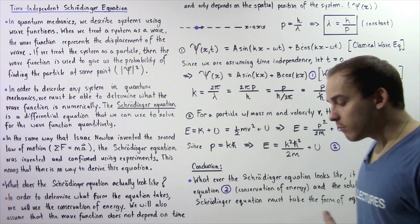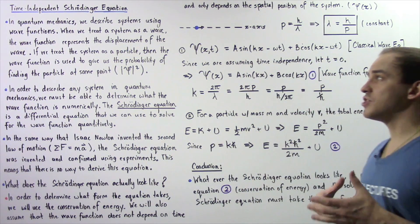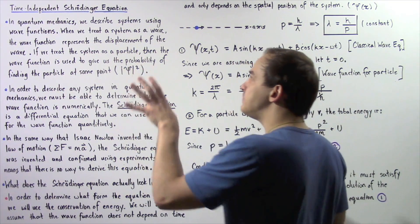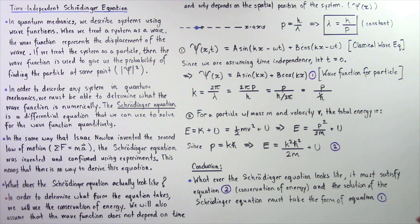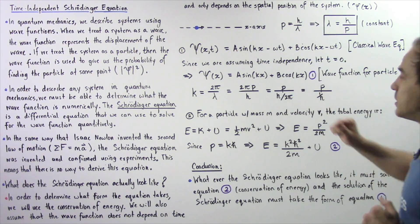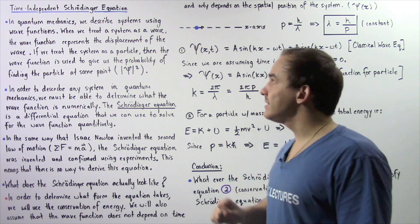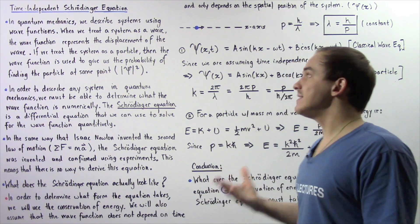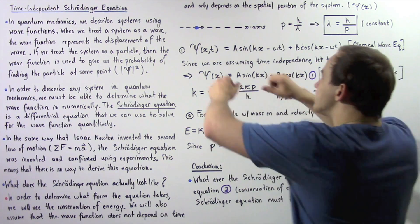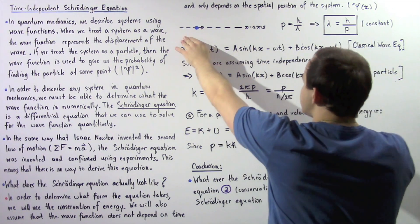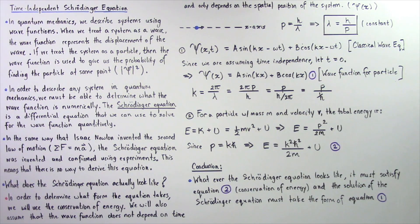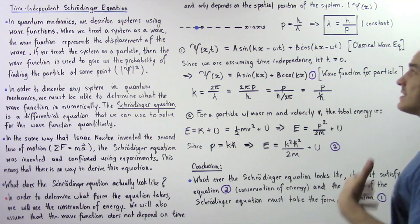A more complicated form — the time-dependent Schrödinger equation — will be addressed in a future lecture. In this lecture, we're only going to focus on the time-independent Schrödinger equation. Let's begin our determination of this equation by considering a particle moving along the x-axis with no forces acting on it — so our particle is in fact a free particle. This means the energy of our particle is constant.